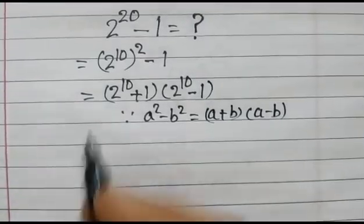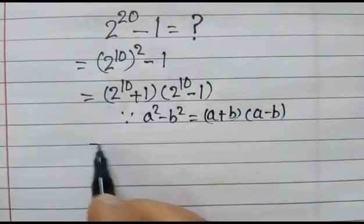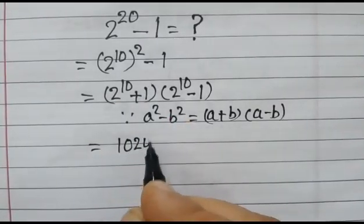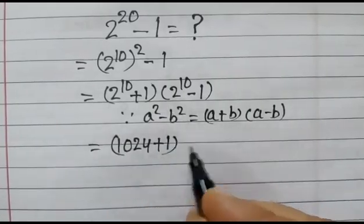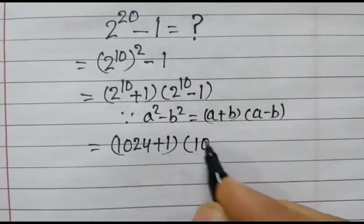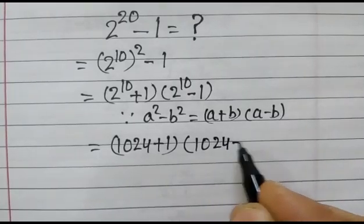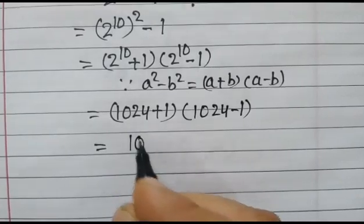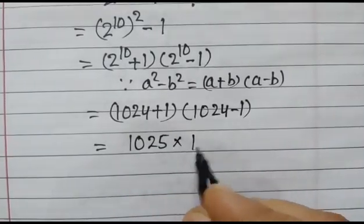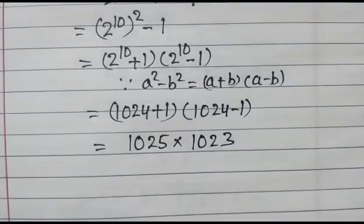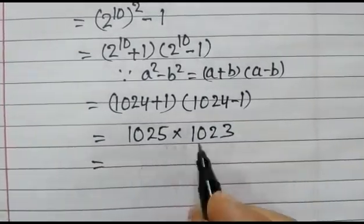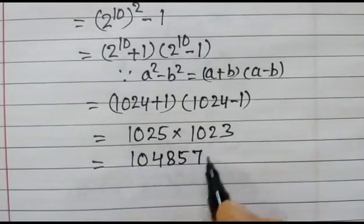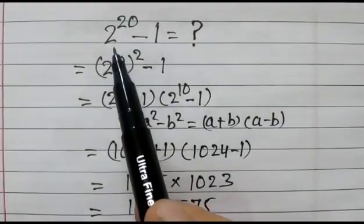Now, 2 to the power 10 is 1024, so we get (1024 plus 1) times (1024 minus 1), which is 1025 times 1023. After multiplication, we get 1,048,575.